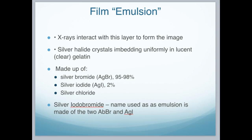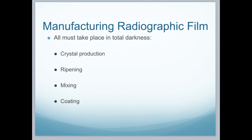The emulsion layer is made up of silver bromide, 95 to 98 percent depending on the manufacturer, silver iodide at 2 percent, and sometimes silver chloride. Silver iodobromide is the name used when the emulsions of silver bromide and silver iodide are combined. All steps of the manufacturing process need to be done in total darkness — the crystal production, the ripening, the mixing, and the coating are all done in the dark.